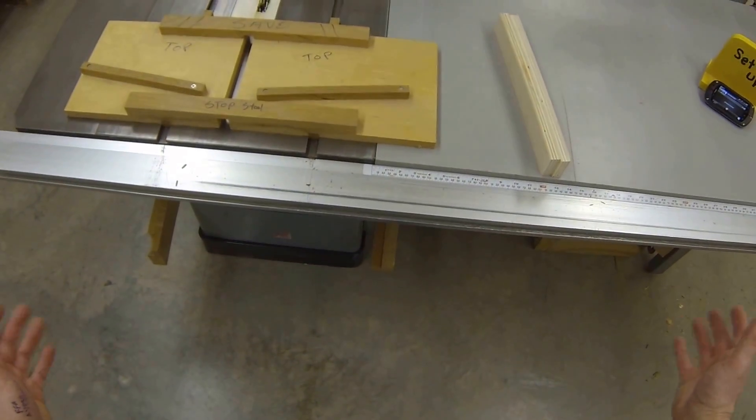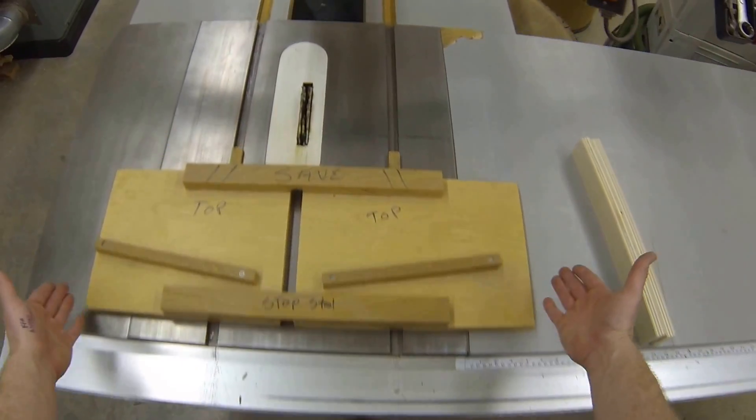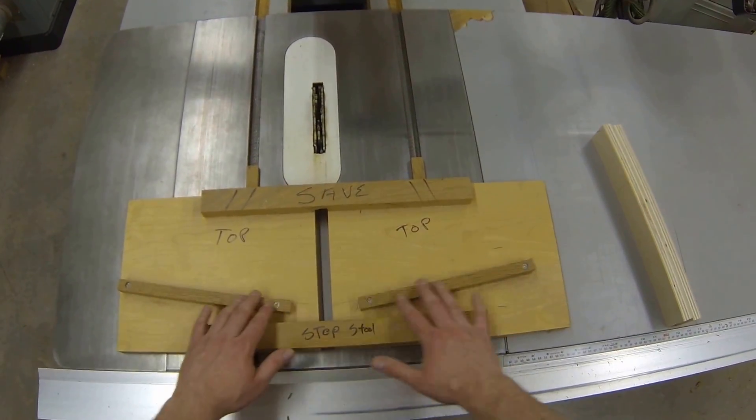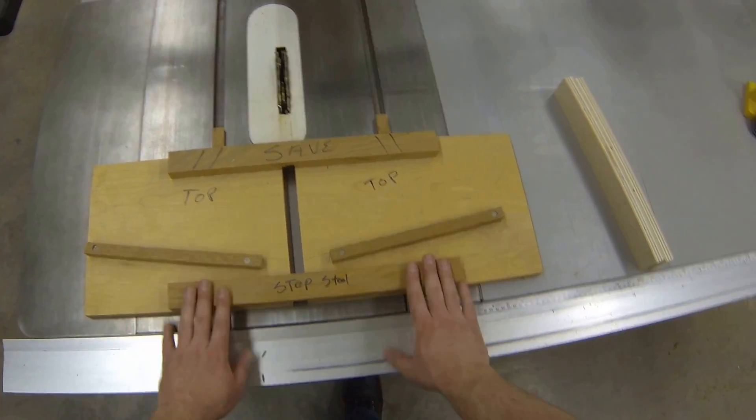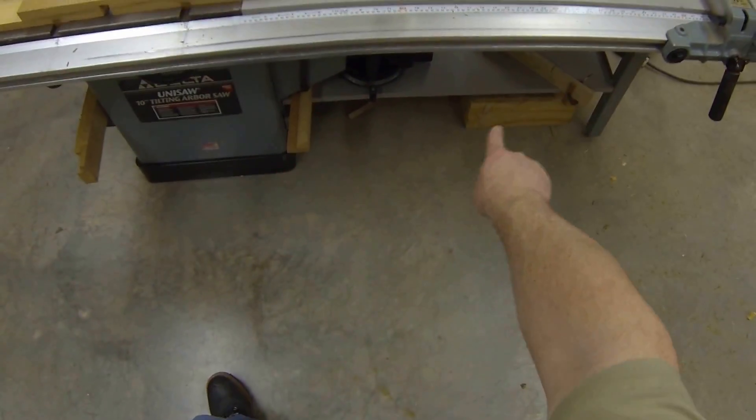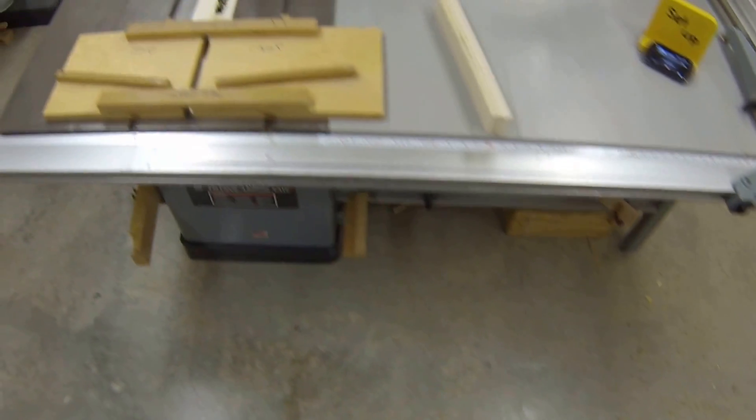Here we are today at the dado saw. There is a sled already made up to do this - it's a jig set up with the eight degree pitch in it already. This is found underneath our table saw.